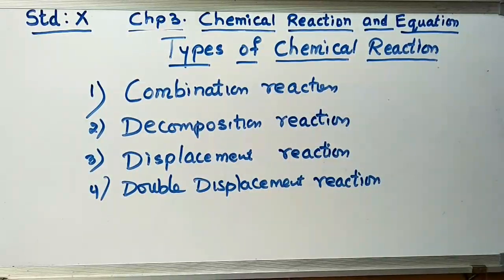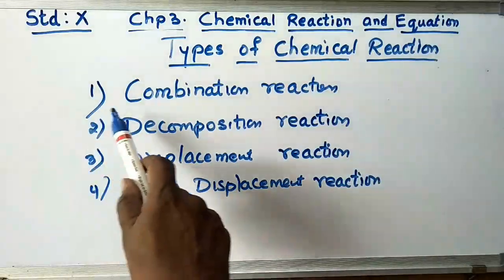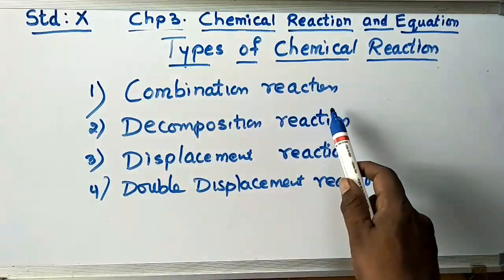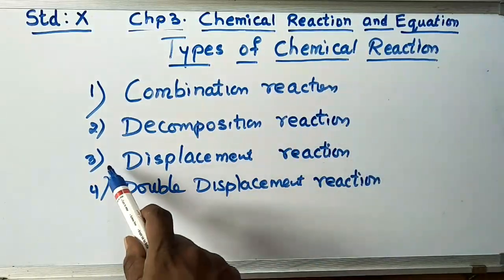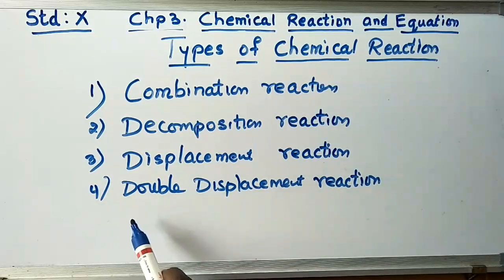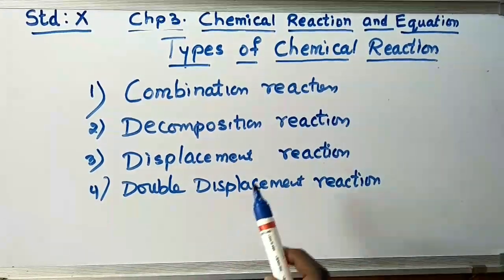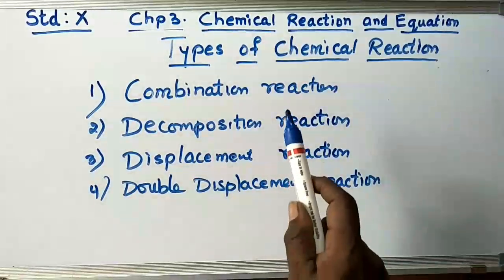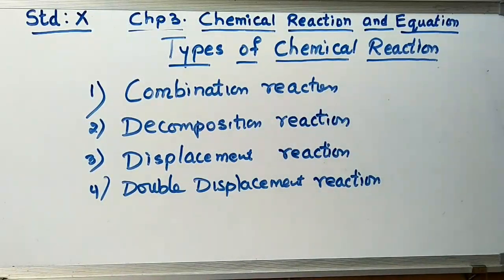Today we will learn the types of chemical reactions. There are four types: the first type is combination reaction, the second type is decomposition reaction, the third type is displacement reaction, and the fourth is double displacement reaction. Now let us learn each reaction one by one in detail.